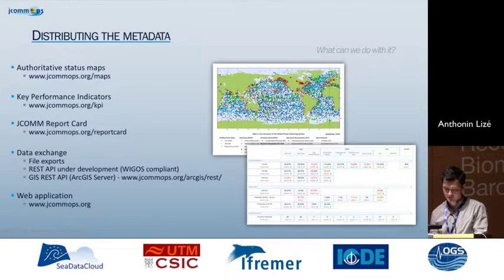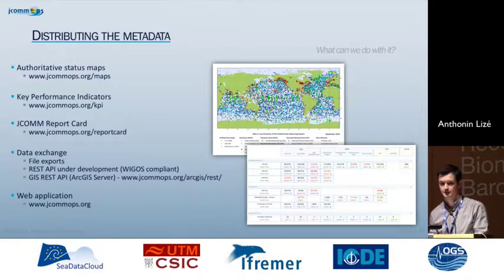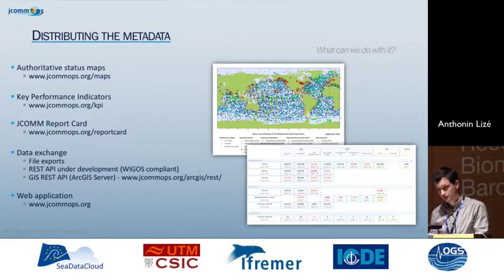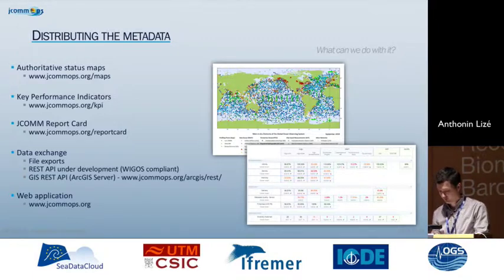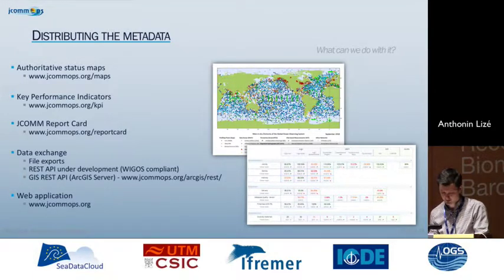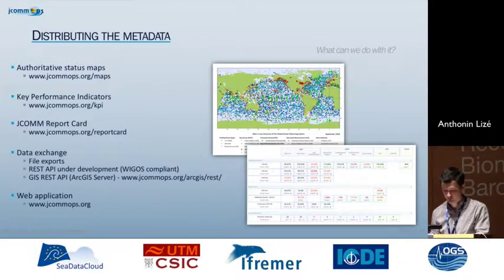This year we released the second edition of the JCOM Report Card, which is a document assessing and reporting on the implementation of the JCOM observing networks. We also redistribute metadata through data exchange: we have historical CSV files being used, and we are working on a REST API that will be WIGOS-compliant. We also have a REST API available with our ERDDAP server.